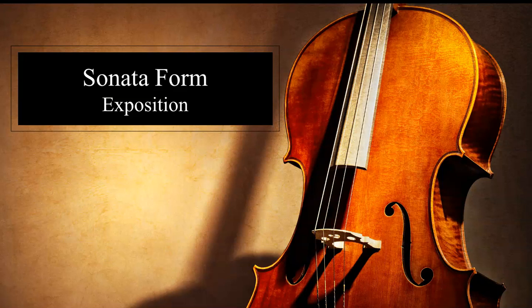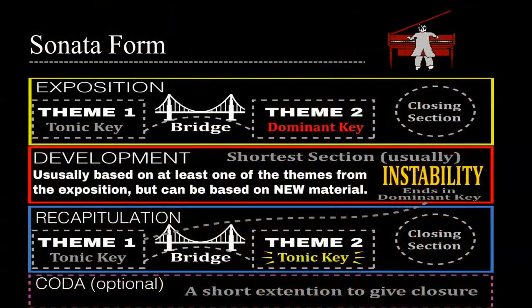In this video, we will be discussing sonata form, specifically the exposition. Sonata form is most commonly found in the first movement of a sonata — a multi-movement work for solo instrument, chamber ensemble, or orchestra with at least one movement in sonata form.